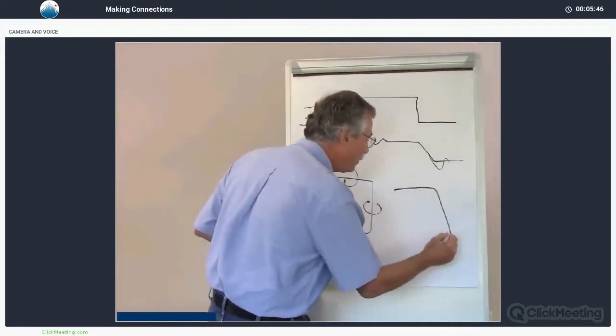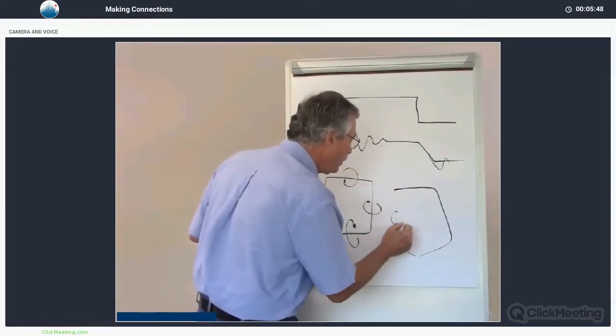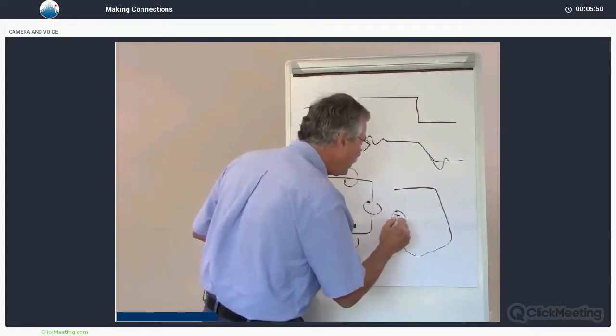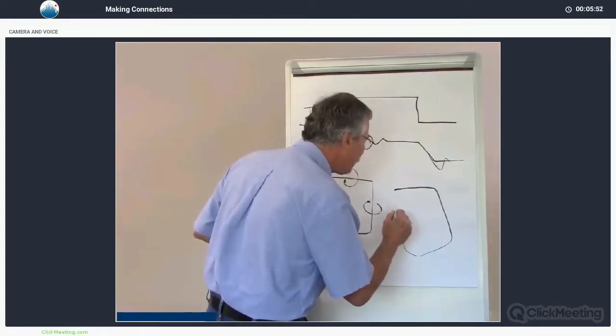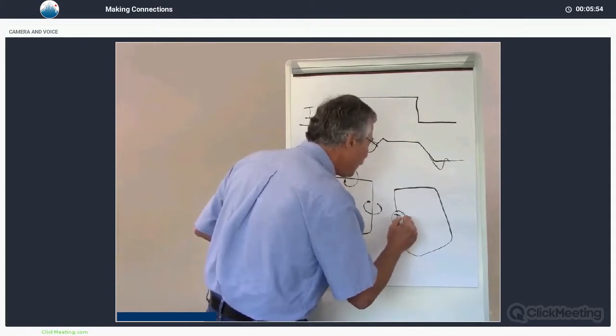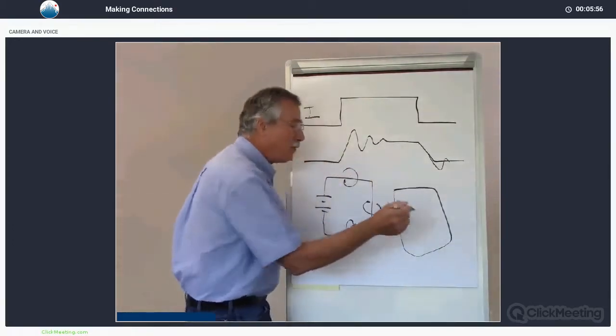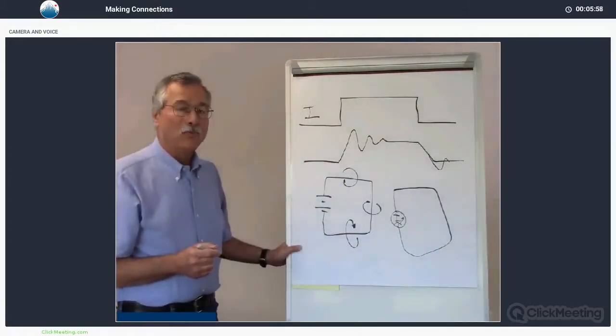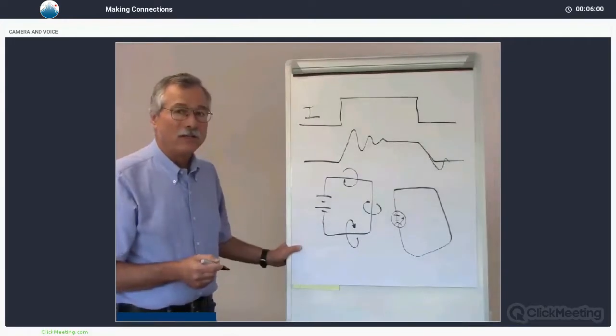Likewise, if we were to take a loop of wire and connect it to a current meter and take a magnet and push it in and out of that loop of wire, we will generate a current.